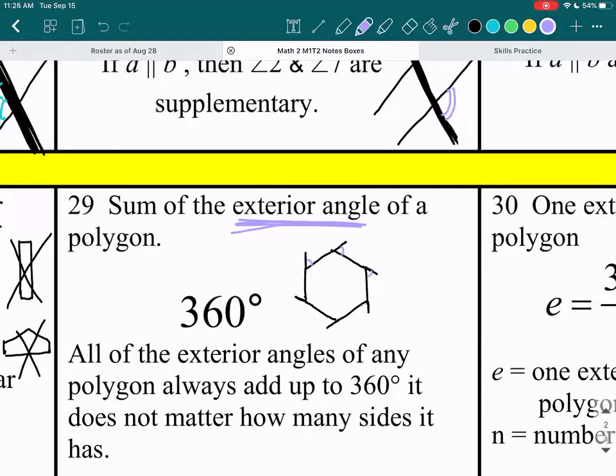So those are your exterior angles. So if you copy the first thing I drew, please erase that and draw this instead. So these are your exterior angles of a polygon.